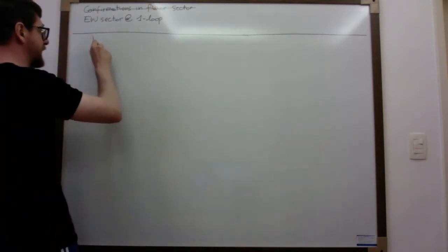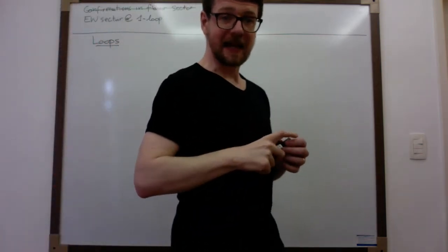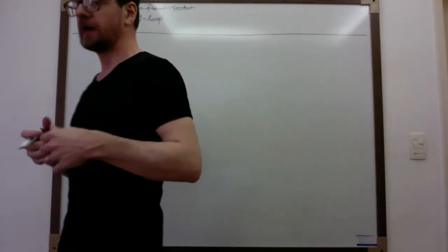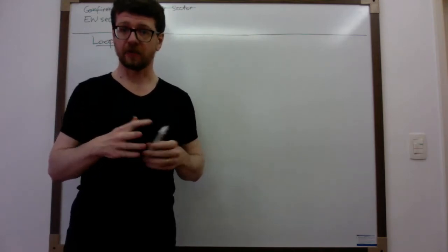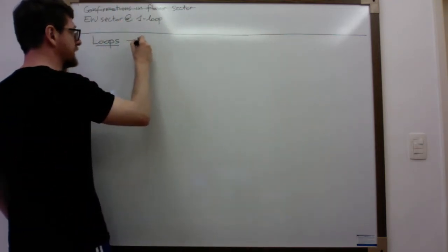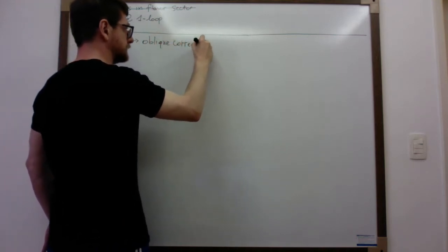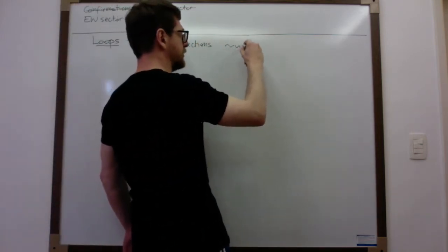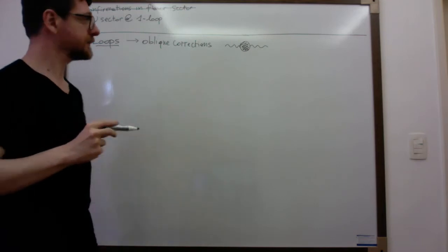So what happens at loop level in the standard model? We are going to restrict ourselves, as in the case of QED, to oblique corrections. The computation has been done completely — not only with oblique corrections — but for the sake of our discussion, let's consider the oblique corrections. I remind you that the oblique corrections are the corrections to the gauge boson propagators.